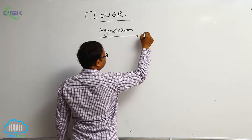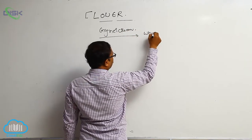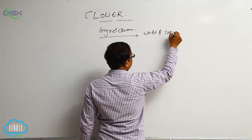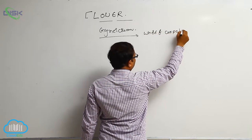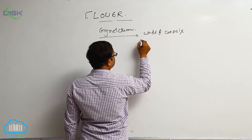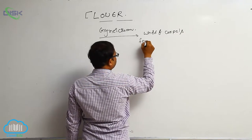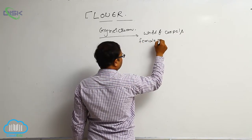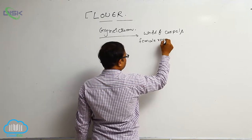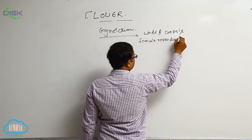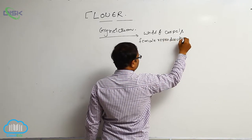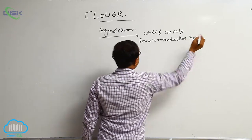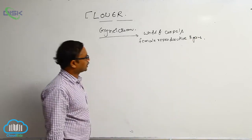Gynoecium means whorl of carpels. It is the fourth whorl and it is a female reproductive organ. That is known as the Gynoecium.